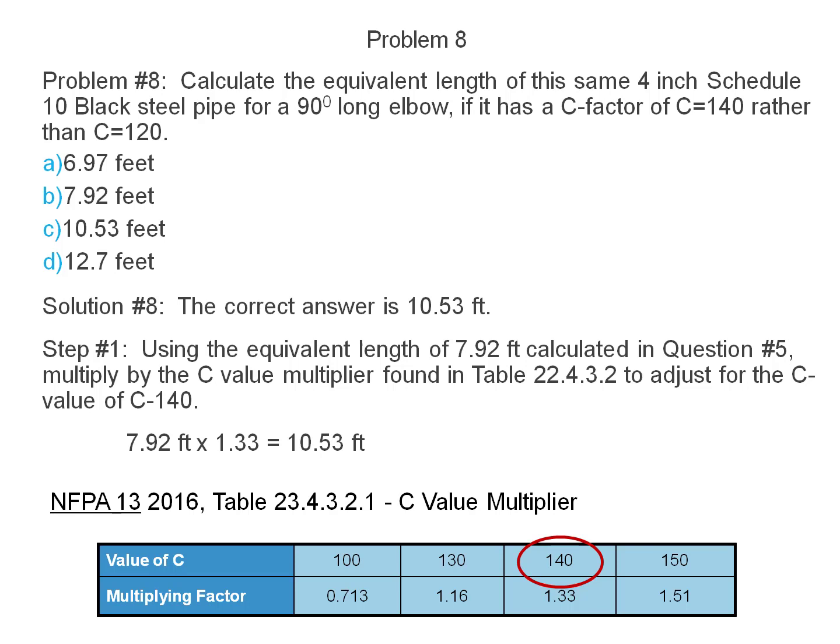Using the equivalent length of 7.92 feet calculated in question number 7, multiply by the C value multiplier found in table 23.4.3.2 to adjust for the C value of 140. 7.92 feet times 1.33, the factor, is equal to 10.53 feet.